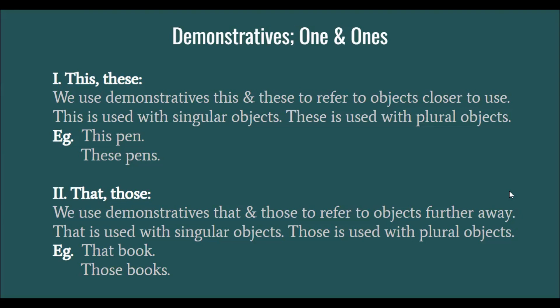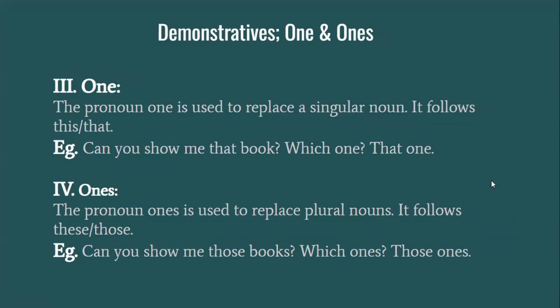In a similar way, we use 'one' and 'ones'. 'One' is a pronoun which we use to replace a singular noun. It follows 'this' and 'that' in a sentence. So if someone says 'can you show me that book,' I can ask 'which one?' — and instead of repeating the word 'book,' I will ask 'which one?' and the answer could be 'one.'